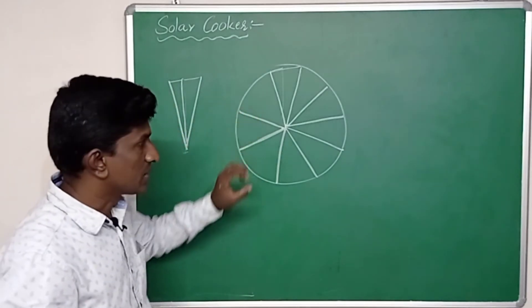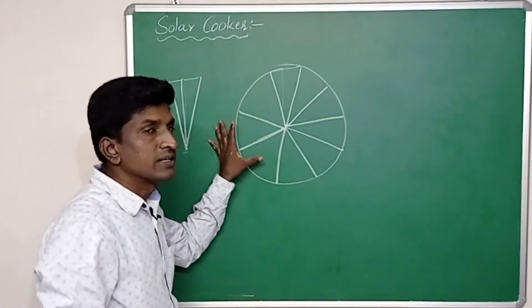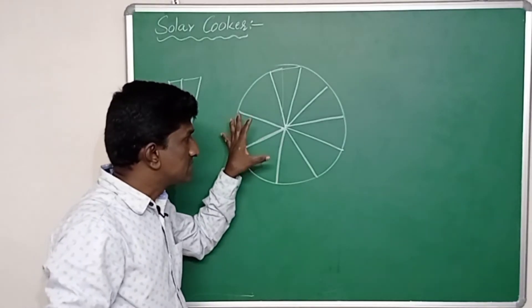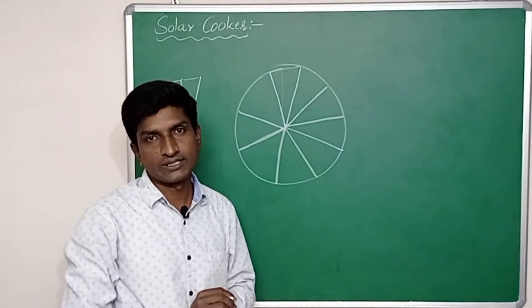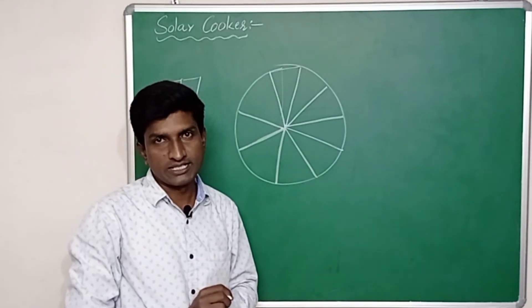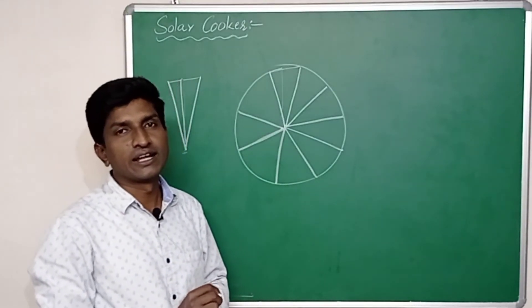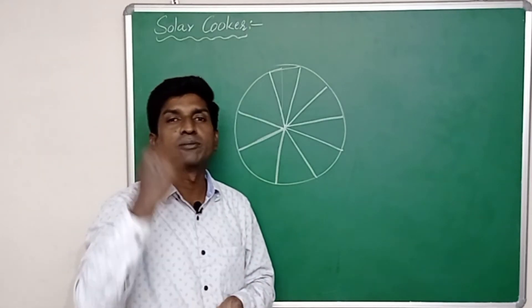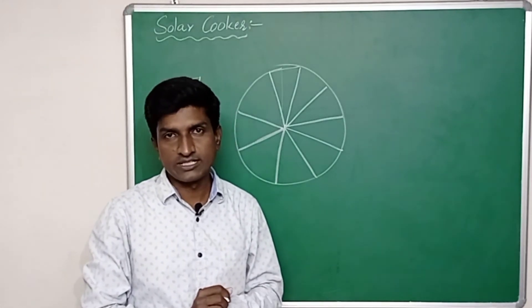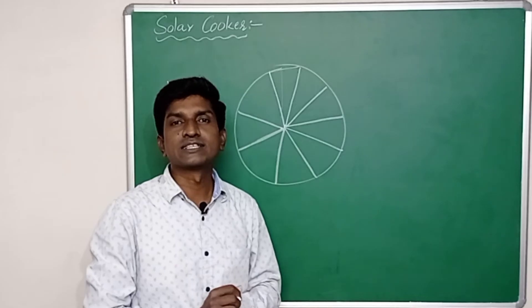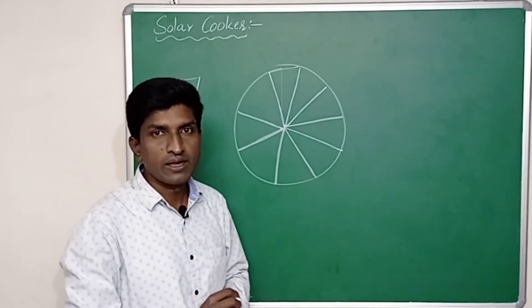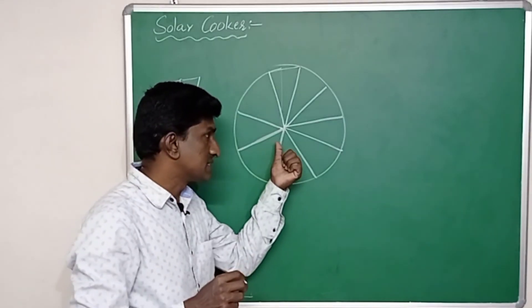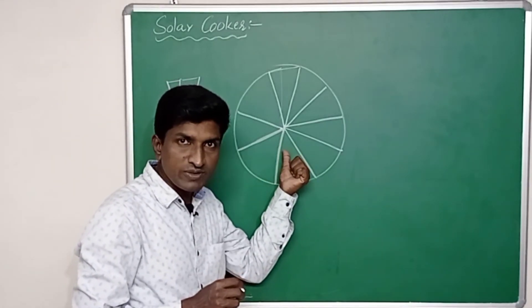In this way we need to arrange each triangle. Now this arrangement has to be focused towards the sunlight. Then what happens? The sunlight rays coming from large distance, which means the sunlight rays are parallel to each other and parallel to the principal axis of this curved concave surface.